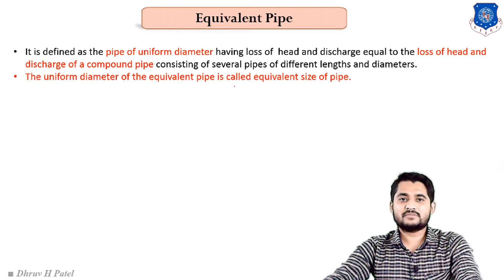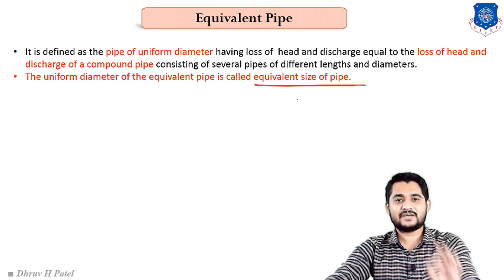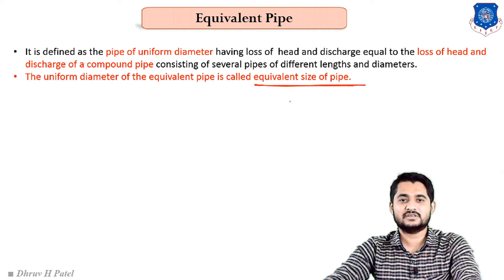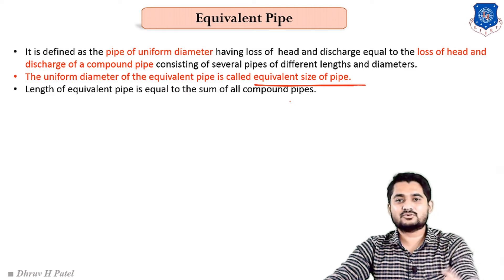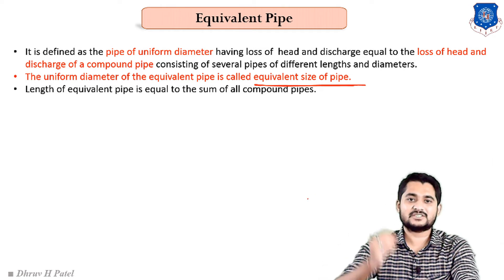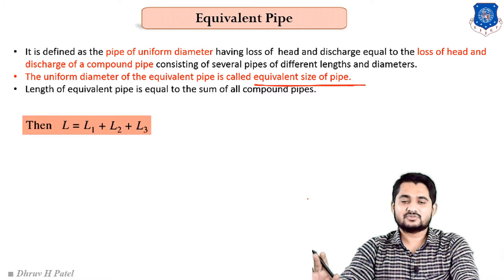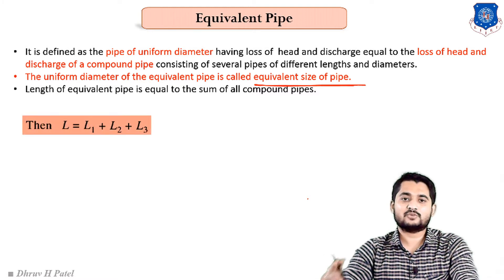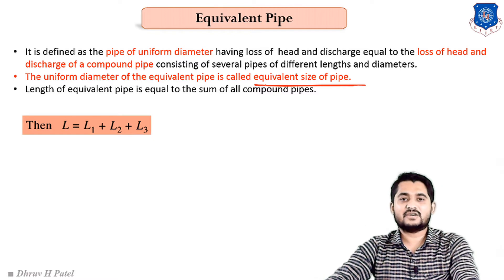The uniform diameter of the equivalent pipe is called the equivalent size of the pipe. The length of the equivalent pipe is equal to the summation of the compound pipe lengths, so L = L1 + L2 + L3. In this example, we have three compound pipes and one equivalent pipe.